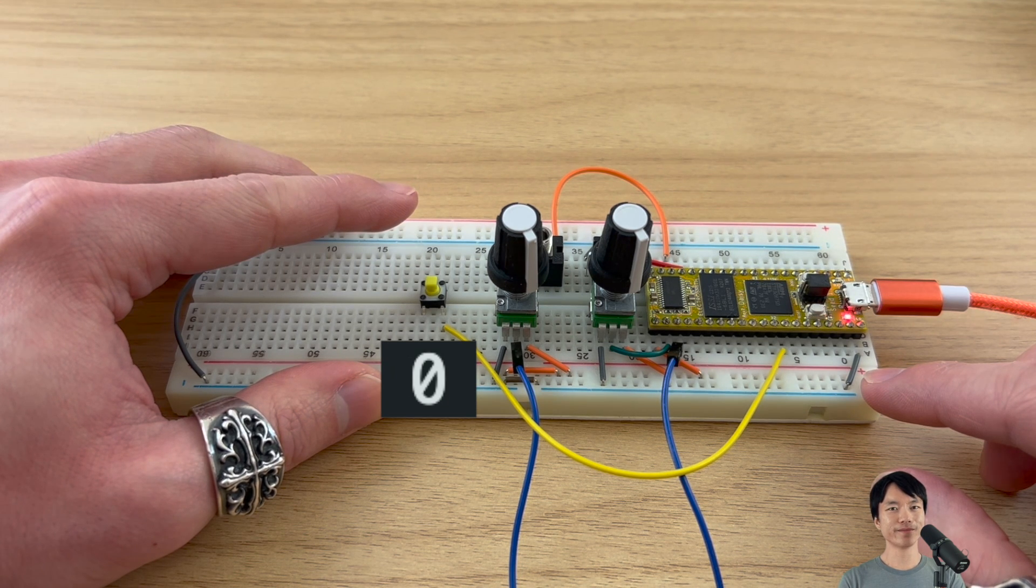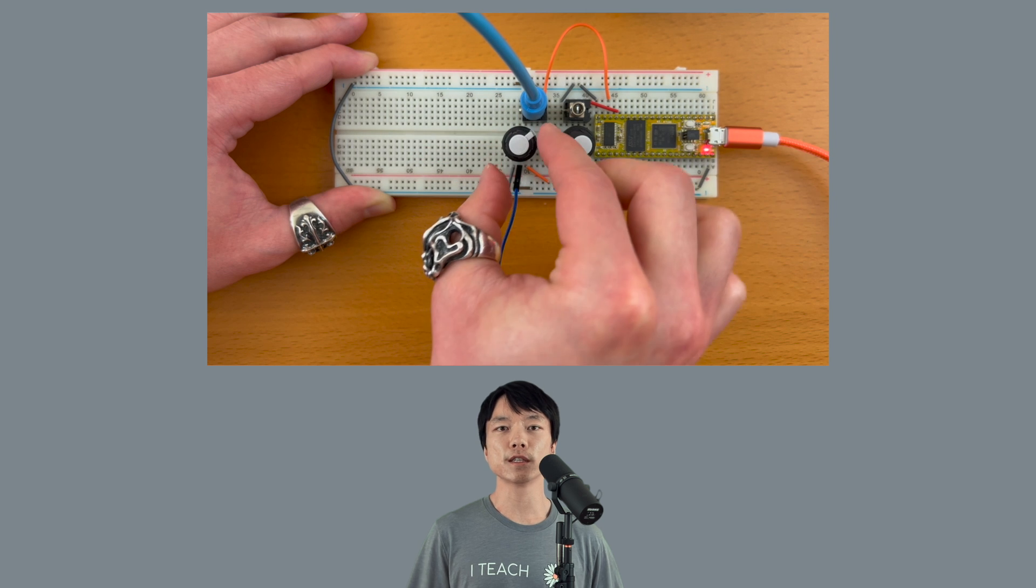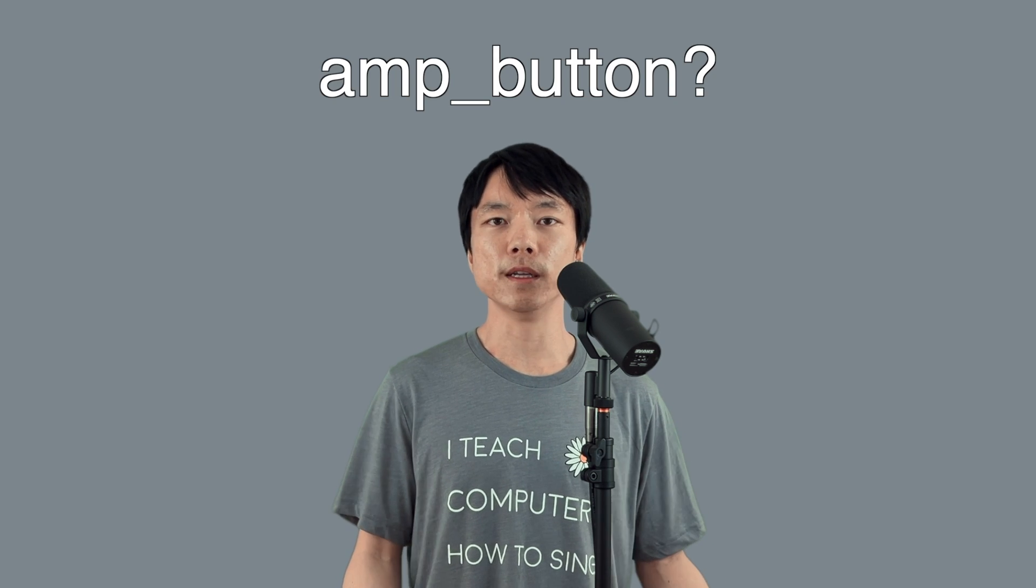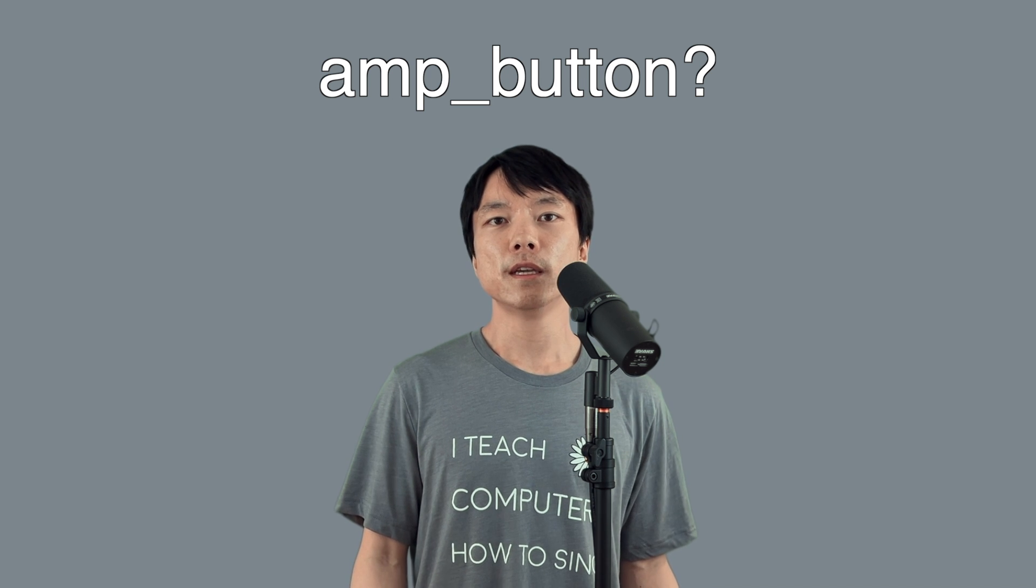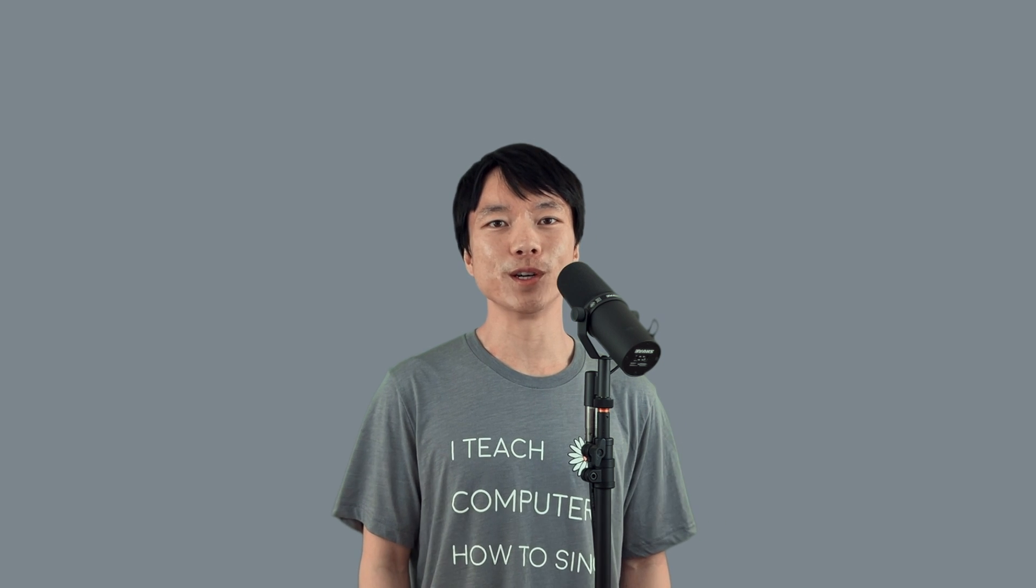Now the fun begins. In the previous tutorial, we mapped the potentiometer's value to the oscillator's amplitude. So we can perhaps have a variable called ampButton that's mapped to the button state, and use that with the setAmp function. Seems like a pretty straightforward approach, so let's give it a try and see if it'll work.